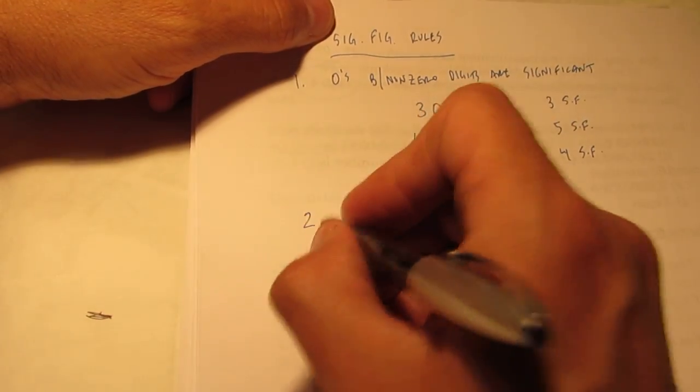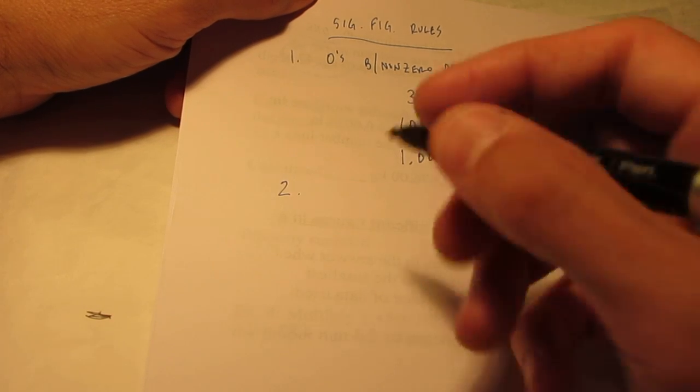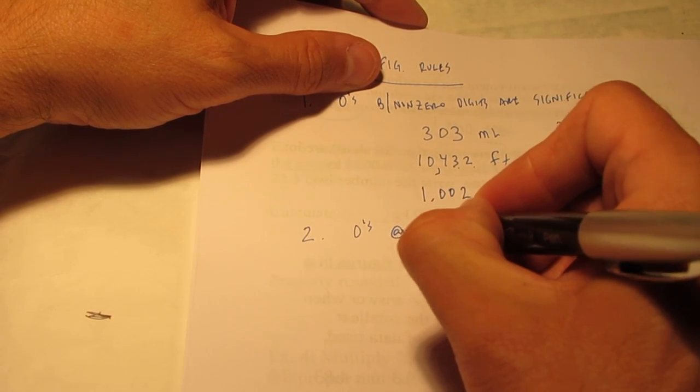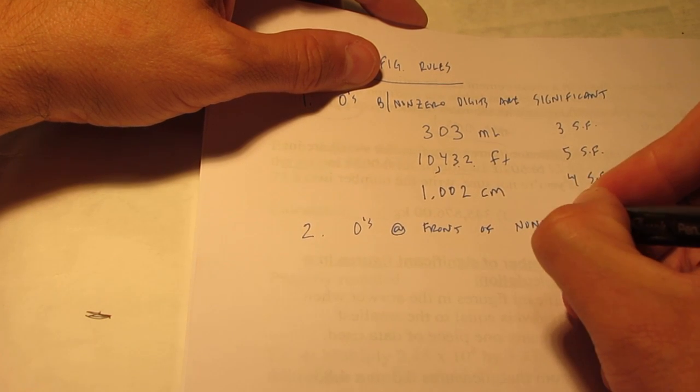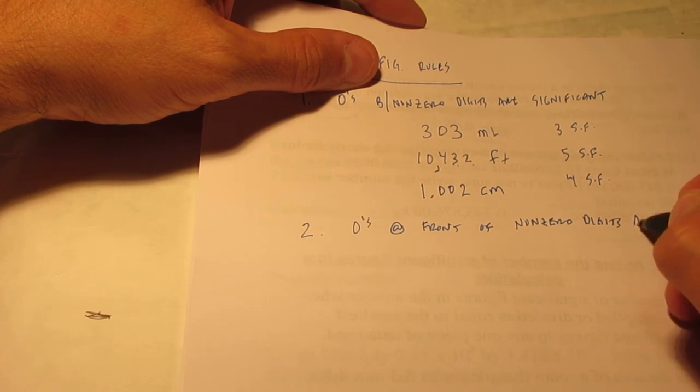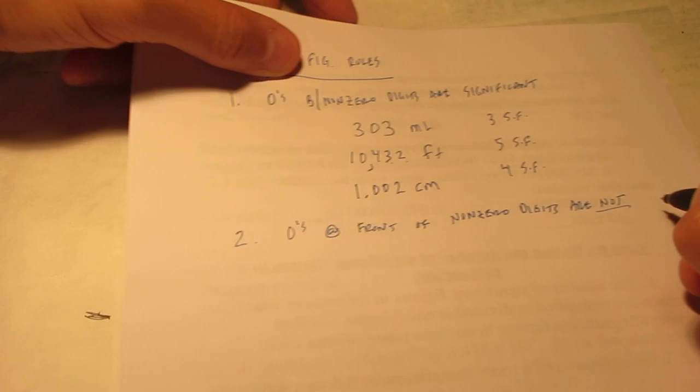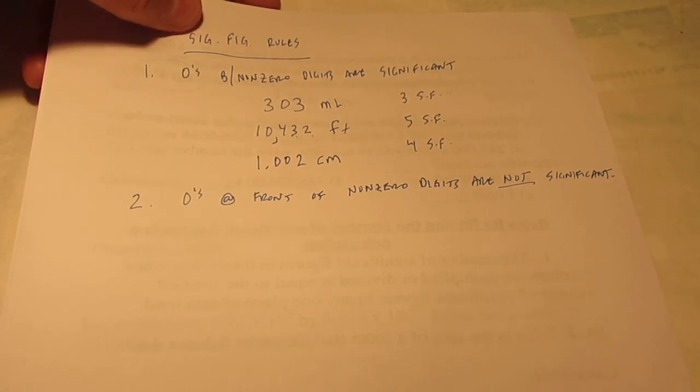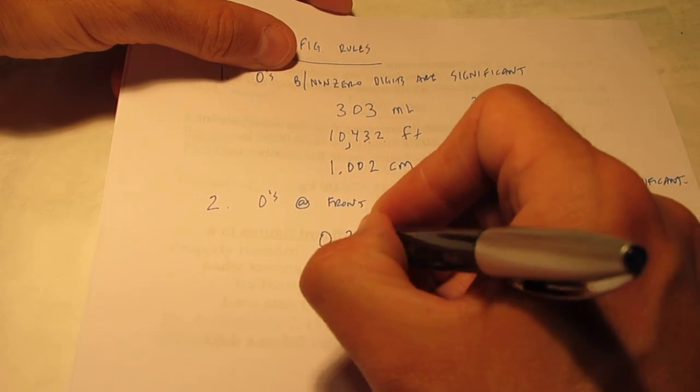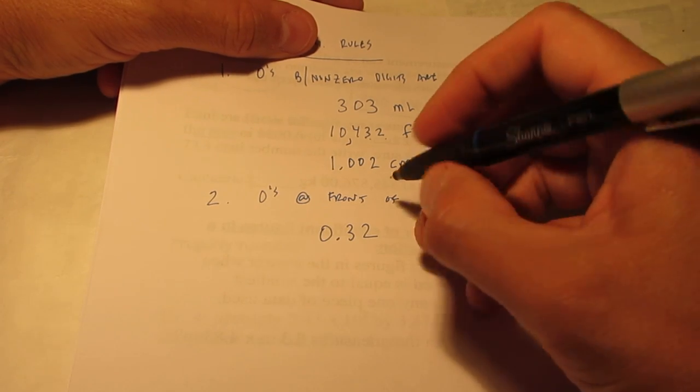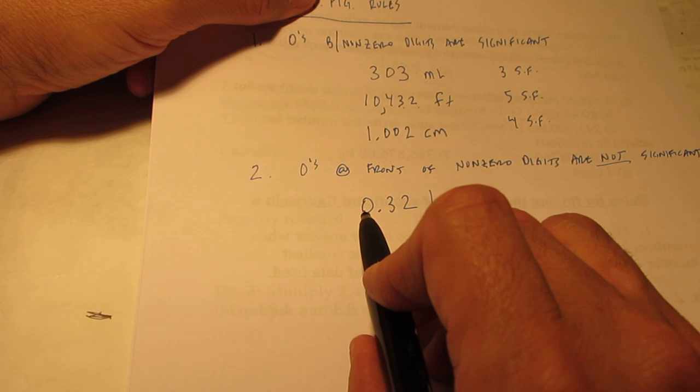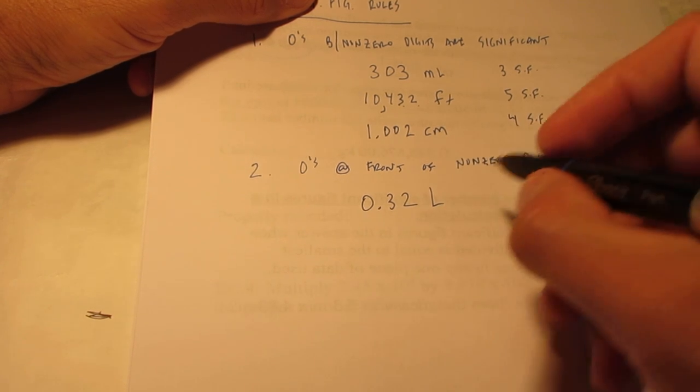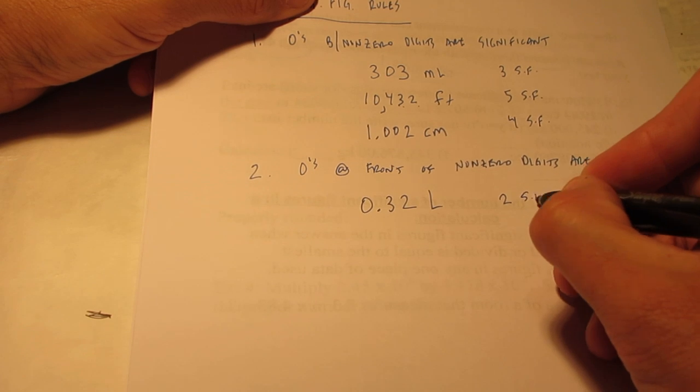Rule number two. Zeros appearing at the front of all non-zero digits are not significant. So, zeros at the front of non-zero digits are not significant. Now, what does that mean? Well, sometimes you'll see in your textbook 0.32. And we'll say that is liters. Okay? Now, that zero just alerts me to the fact that a decimal is on its way. That zero is not a measured quantity, so it's not significant. So, this measurement would have two significant figures in it.